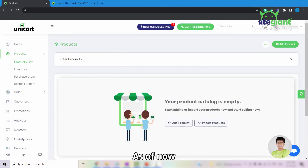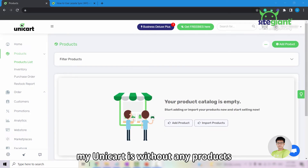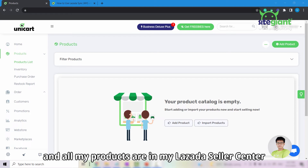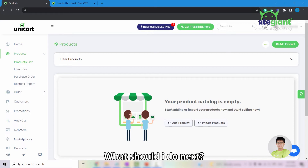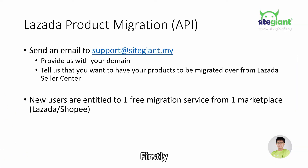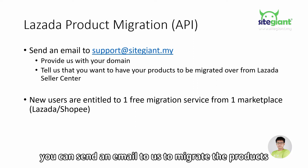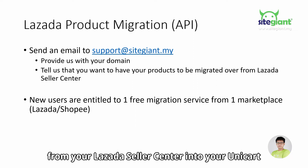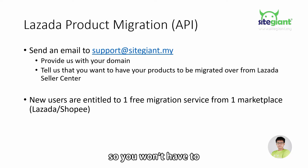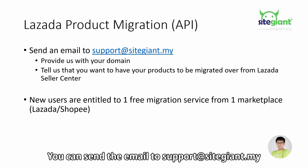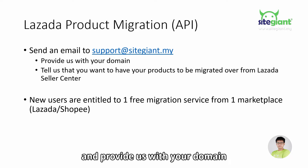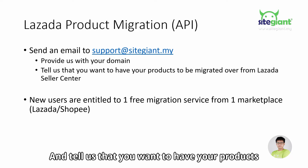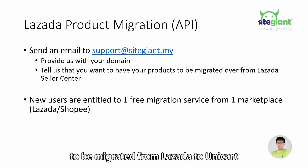As of now, my Unicard is without any products and all my products are in my Lazada Seller Center. What should I do next? Firstly, you can send an email to us to migrate the products from your Lazada Seller Center into your Unicard so you won't have to recreate the whole listing again. You can send the email to support@sitegiant.my and provide us with your domain and tell us that you want to have your products migrated from Lazada to Unicard.